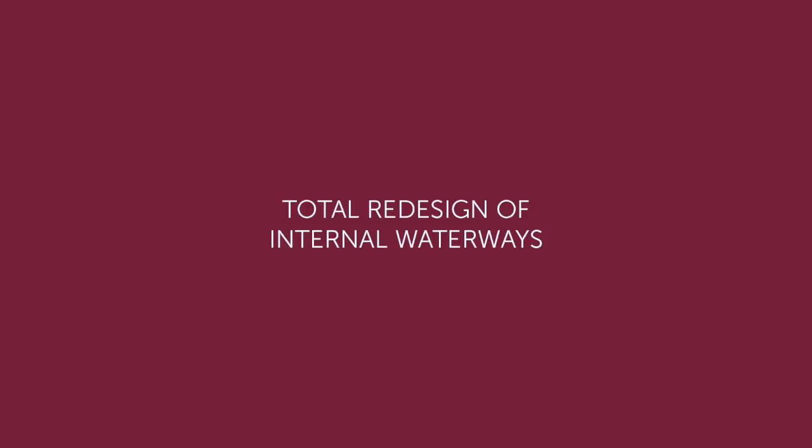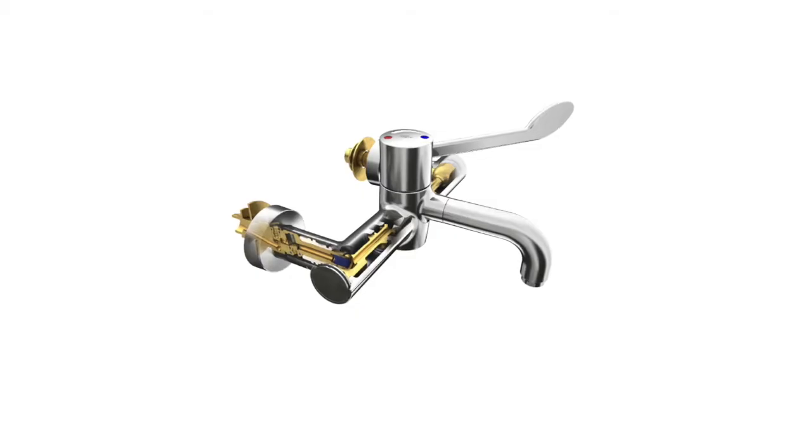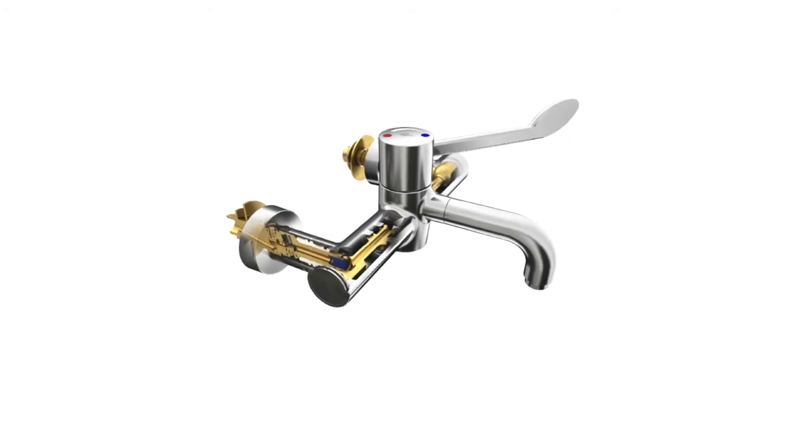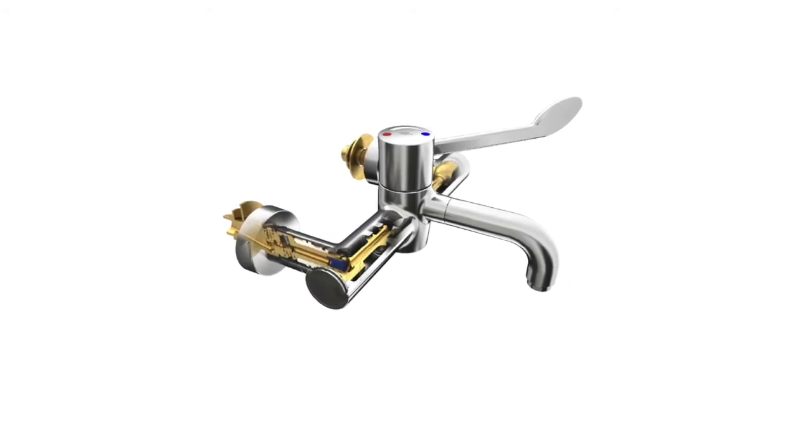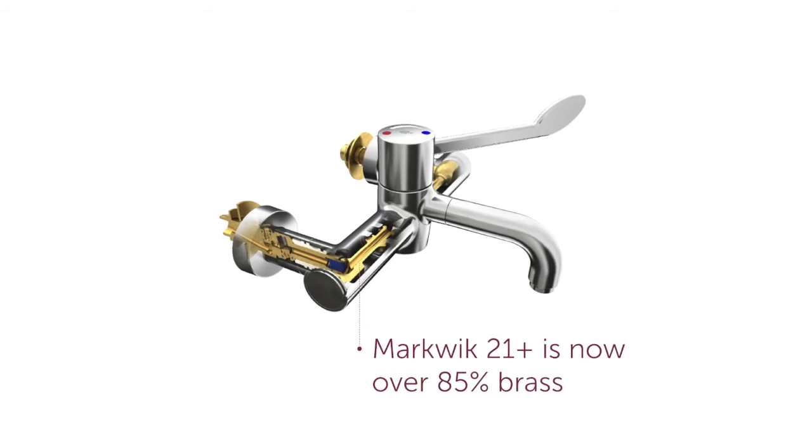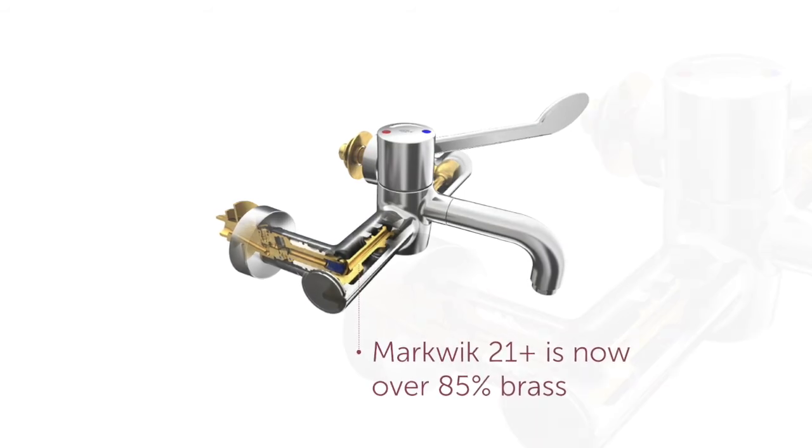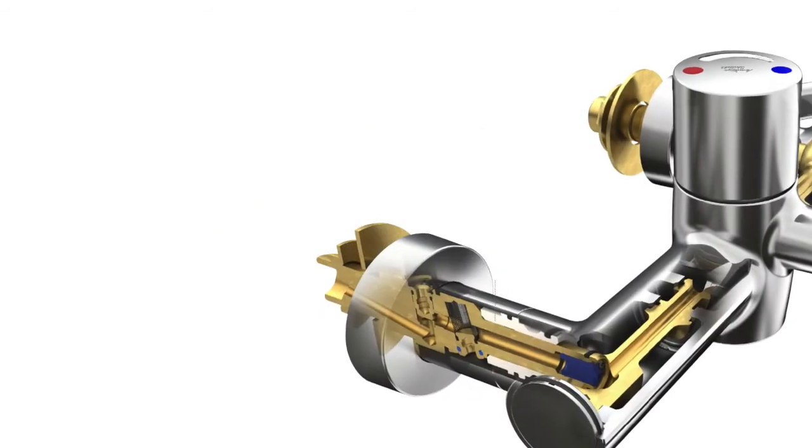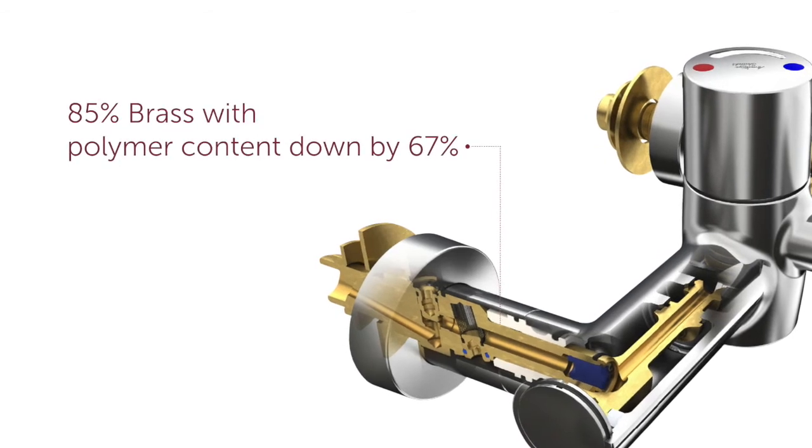We started with the total redesign of the internal waterways, looking at the complexity of the design. The internal body structure now has less polymer components and more brass. Markquik is now over 85% brass, which has natural antimicrobial properties, with polymer content down by 67%.